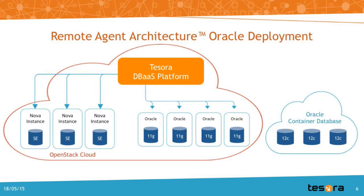This doesn't really fit into the whole Trove model of spinning up a Nova instance and having the software installed and running on it. Typically, this software will already be installed somewhere and managed by a group. So what we decided to do is have Trove start up a small Nova instance where the guest agent acts as a proxy to the Oracle database — what we call a remote agent. When you do a Trove create, it won't actually set up the database since that already exists; it sets up a small controller that talks to the database and sets up databases, users, and things like that.